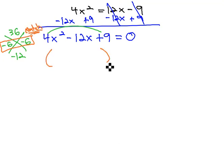When they match, we stop everything and say it's going to be something squared equals 0.